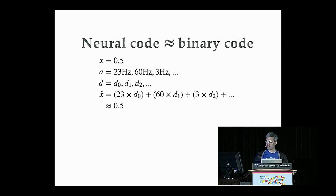So 23 times our first decoder, 60 times our second decoder, etc. You add all these things up, and you get a number that's close to 0.5. It's not exact, but in most cases it's sufficient. So what essentially this gives us is a way to represent information, and we can use similar methods to transform that information.